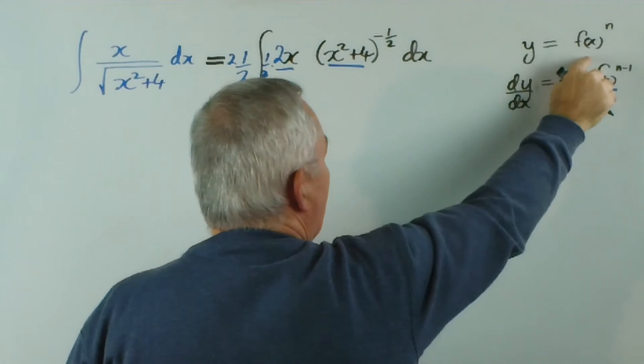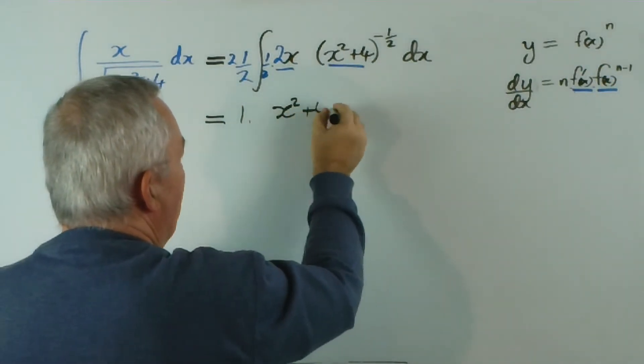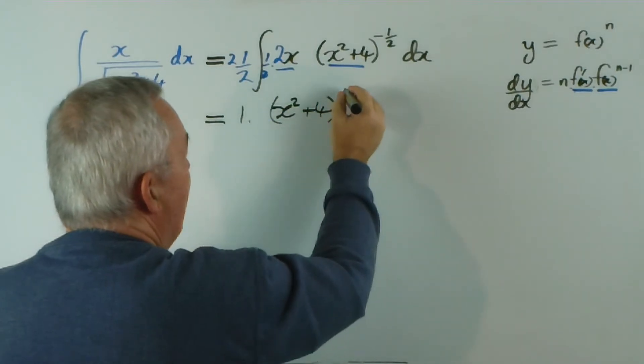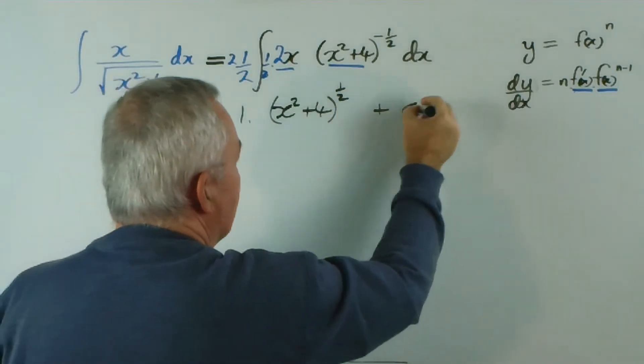So when we integrate it, we get the function to the power n, which is x squared plus 4 to the power n, which is the number we had out the front, plus a half, plus c of course.